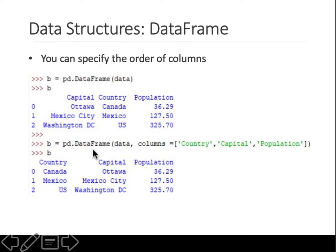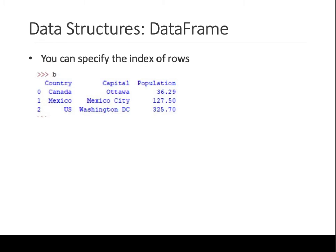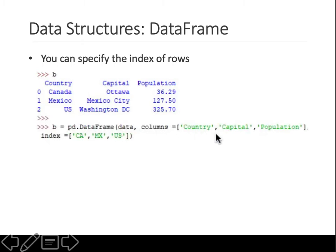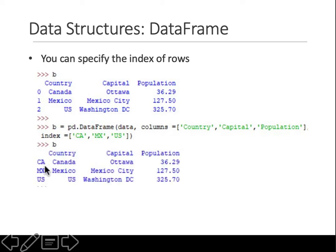You can also specify the indices of rows, just like we did for Series. Rows are indexed 0, 1, 2 by default but you can give each row a name. At creation time, the 'columns' argument sets column order and the 'index' argument sets the row index names. For example, the first row is named 'ca', the second 'mx', the third 'us'. This isn't always necessary but may be required depending on the application.